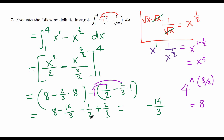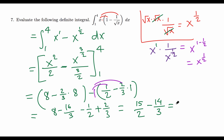And 8 minus 1/2 is 7 and 1/2, which equals 15/2. Now combining 15/2 minus 14/3: the common denominator is 6. That gives 45/6 minus 28/6, which equals 17/6. That's the final answer.